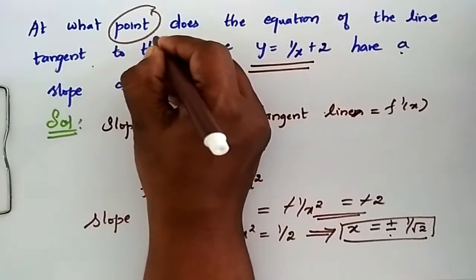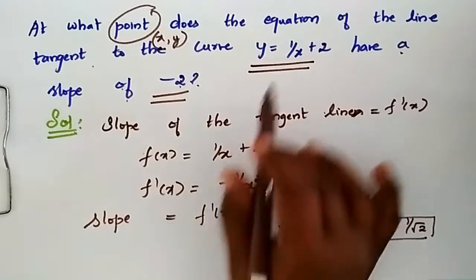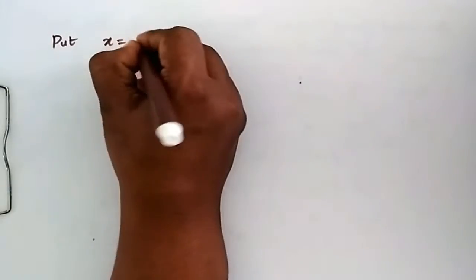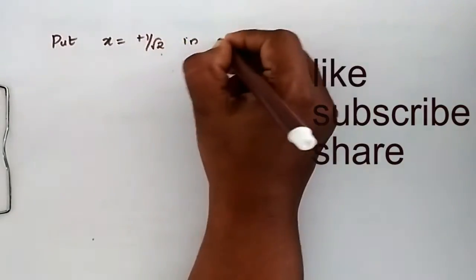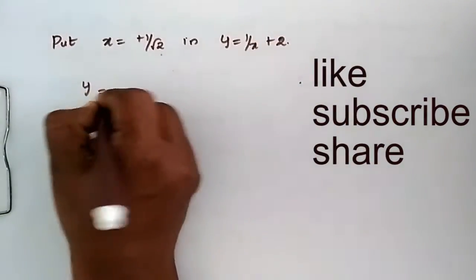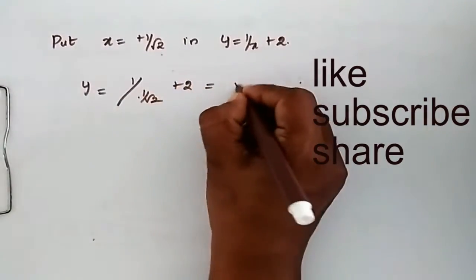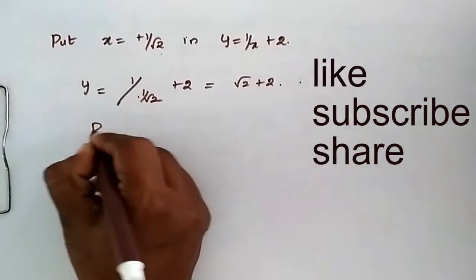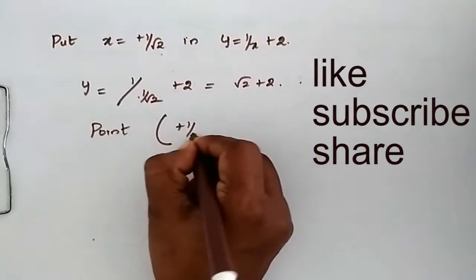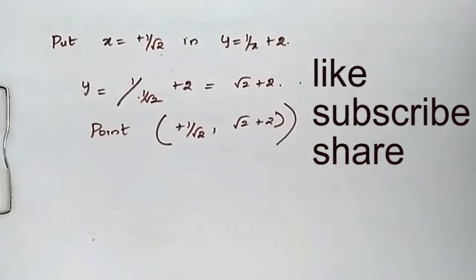Now we find the point — the x-coordinate and y-coordinate. Substituting x = +1/√2 into y = 1/x + 2 gives y = √2 + 2. So this point is (1/√2, √2 + 2). This is one point.